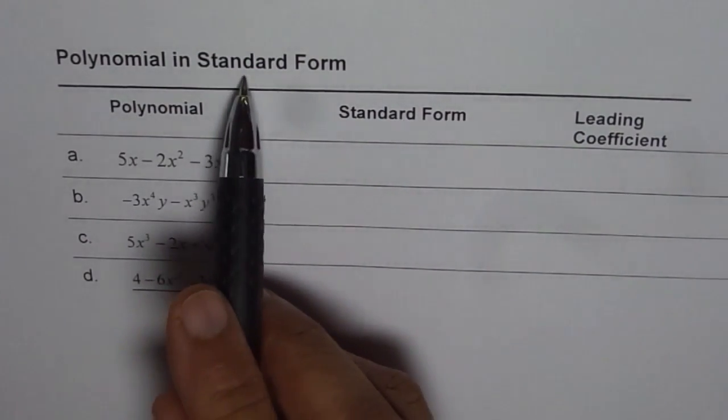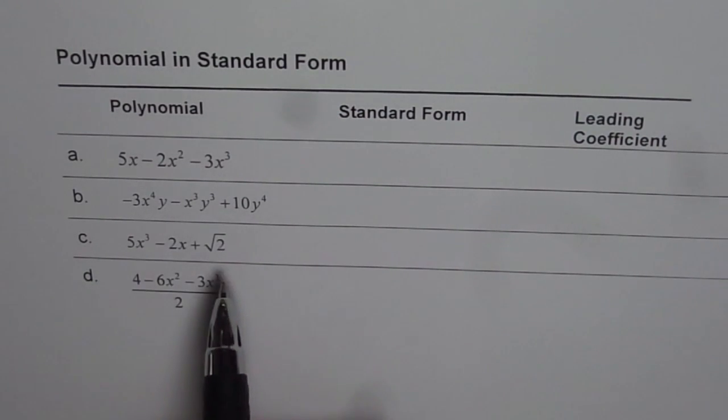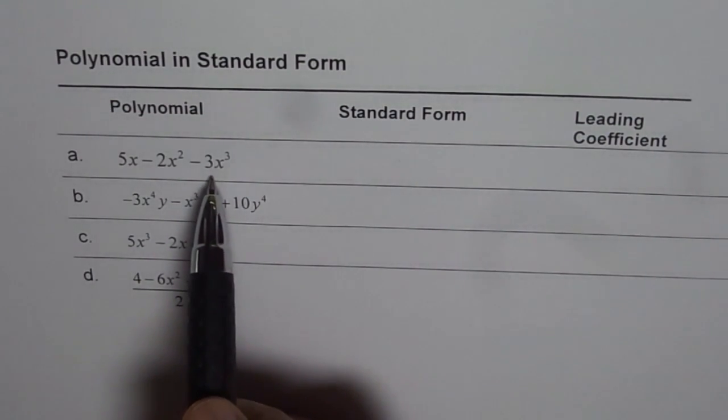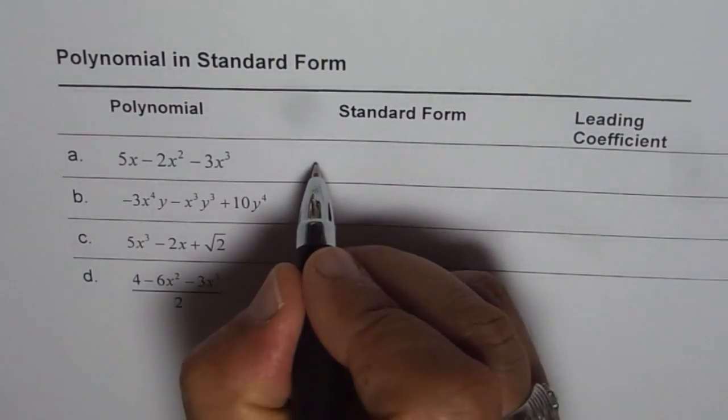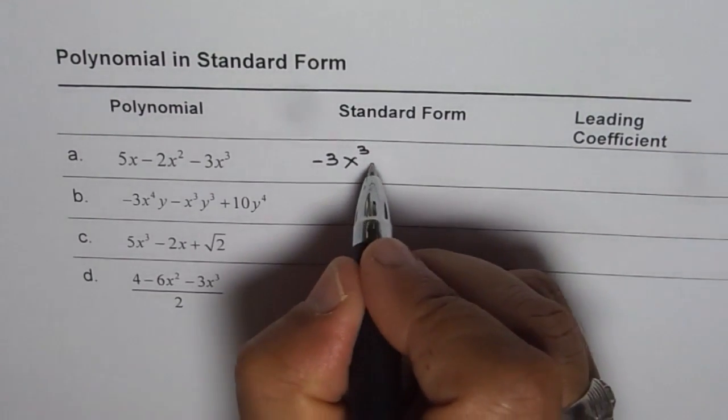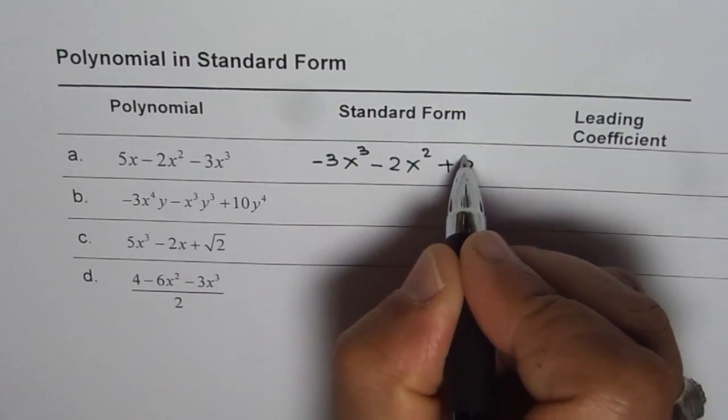To write them in standard form means to write in decreasing order of their degrees. So each term will be written with decreasing order of their degree. Since the third term has the highest degree, it will be written first. So we can write this polynomial as minus 3x cubed, then minus 2x squared, plus 5x.